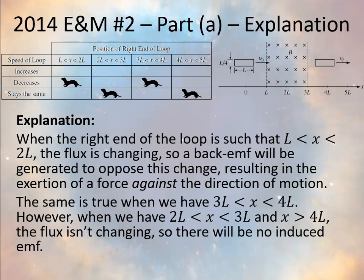An upward current vector cross a magnetic field into the page — using F = IL × B — gives a force toward the left, meaning the speed decreases since the loop is already moving right. Similarly, when x is between 3L and 4L, the clockwise current means the left side of the loop carries current upward, and L up cross B into the page again gives a force to the left. The top and bottom of the loop also experience magnetic forces, but those forces cancel.